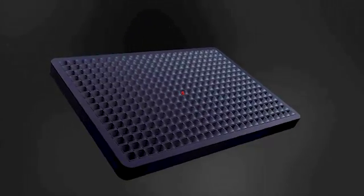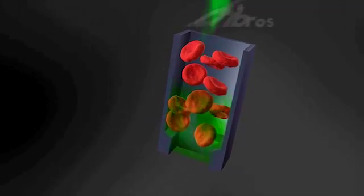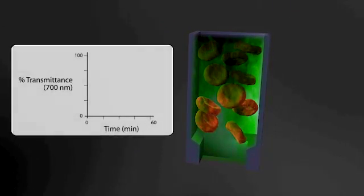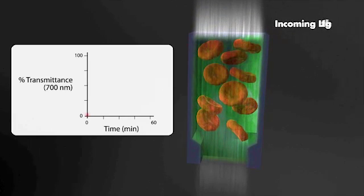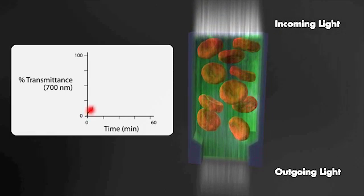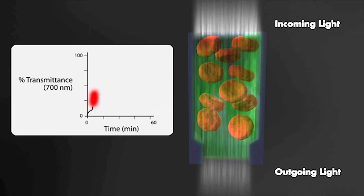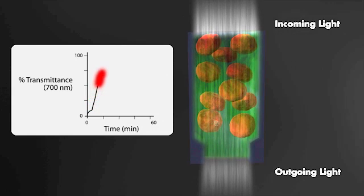We followed osmotic lysis kinetics in microwell plates by tracking light transmittance through a cell suspension. The time required to reach the transmittance plateau is a measure of sorbitol permeability and is conserved in human and non-human malaria parasites.